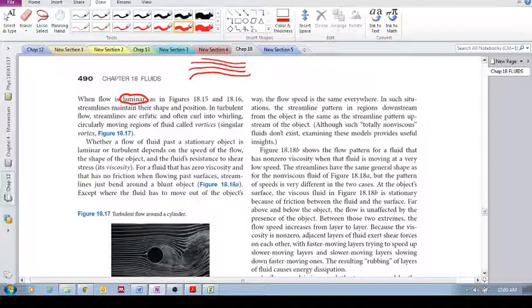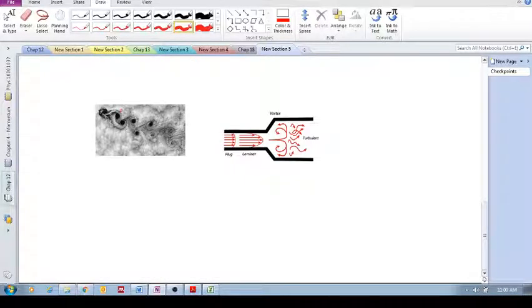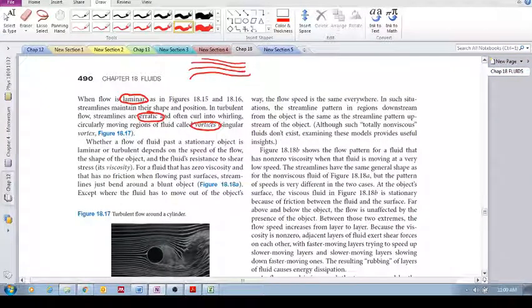Whereas with turbulence, the streamlines are again erratic, chaotic. I hope we're getting the idea. They often curl into things called vortices. And that's kind of what I was showing you here. These are vortices, they've got this kind of shape. These are the vortices that we see, those kinds of shapes.